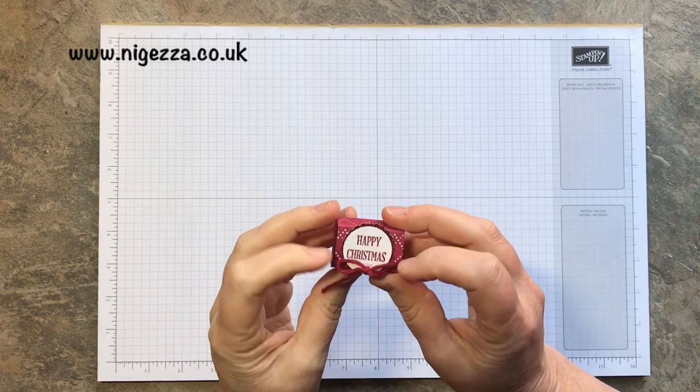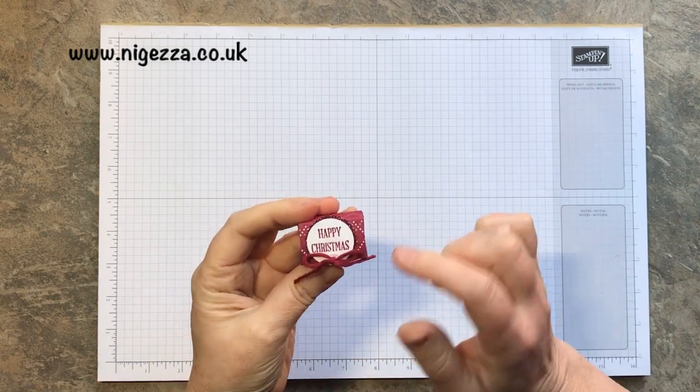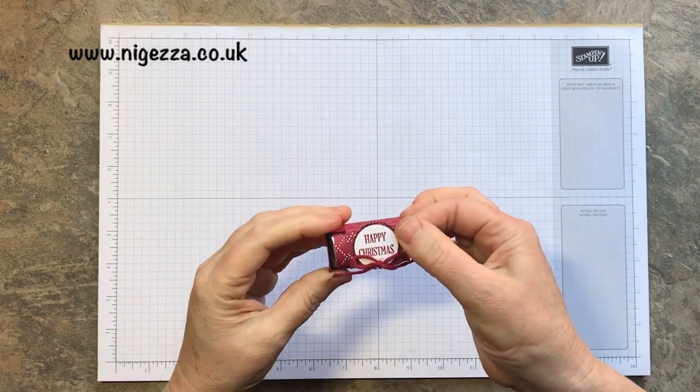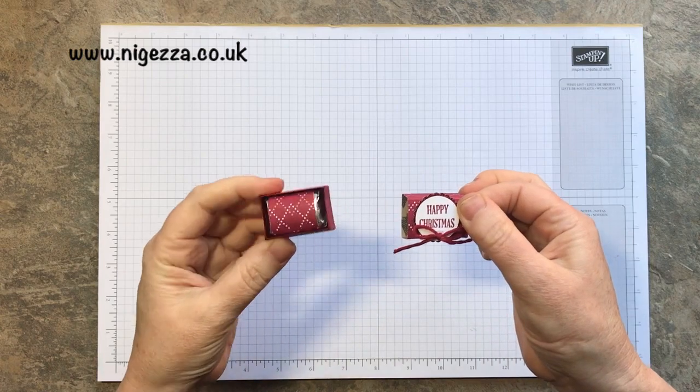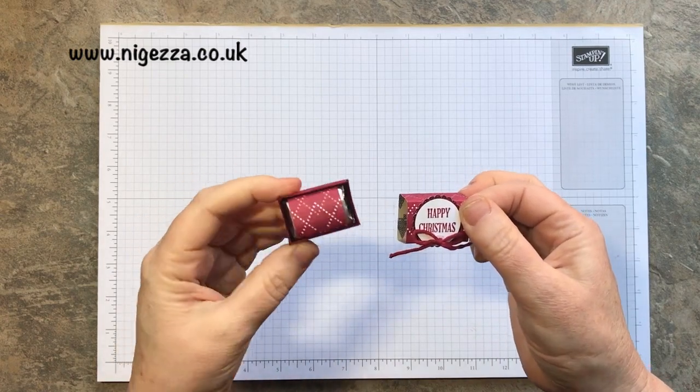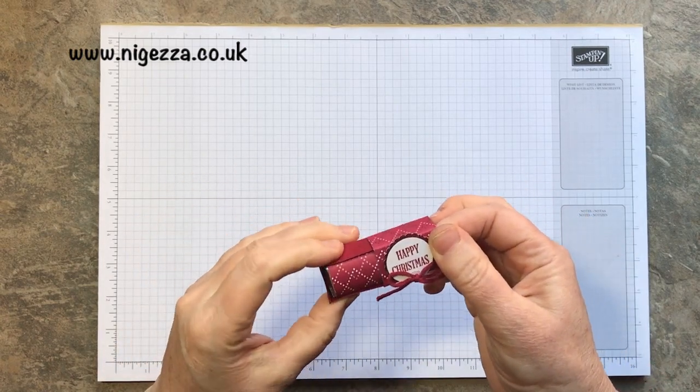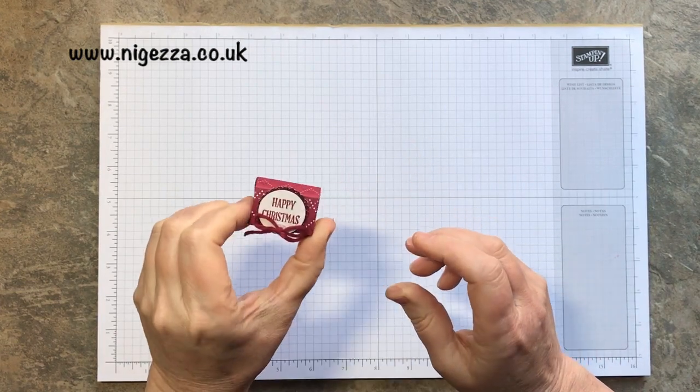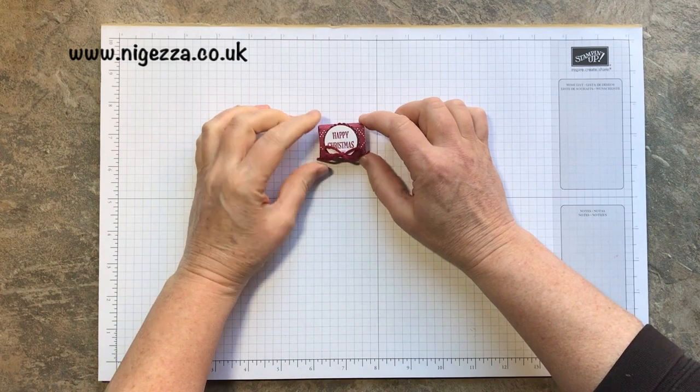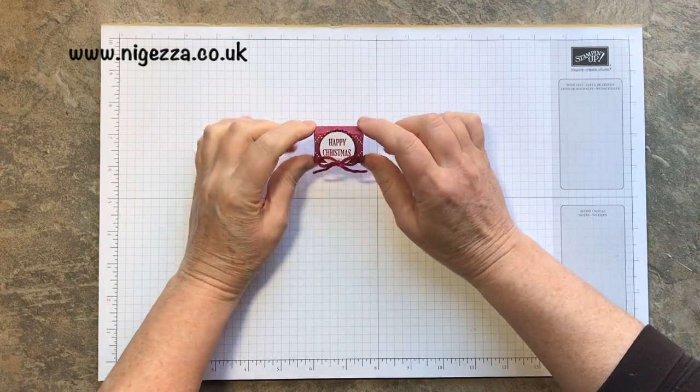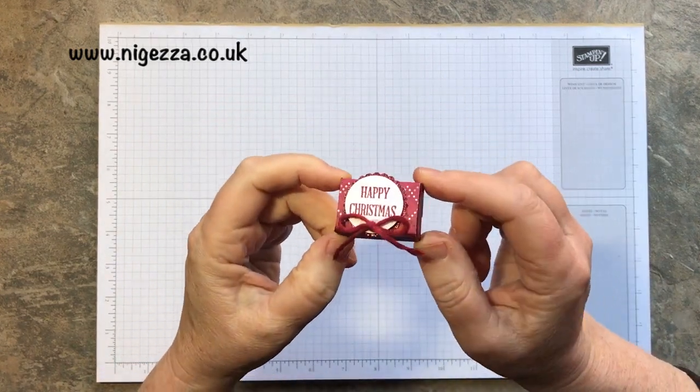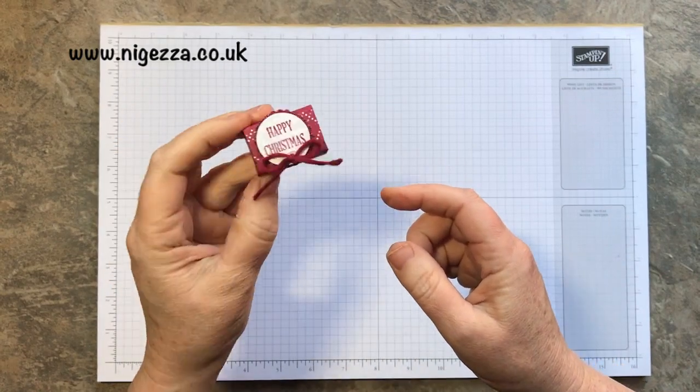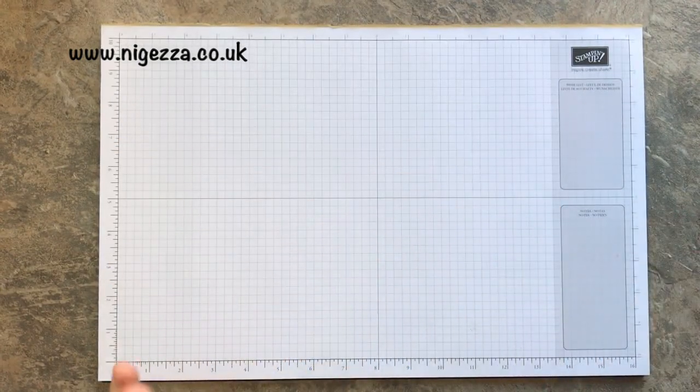This is my little prototype made from retired supplies. It holds a single wrapped Hershey Nugget, which is great for placing on top of the Christmas table or inside a Christmas cracker. If you're making your own Christmas crackers this year, this would go inside really nicely.